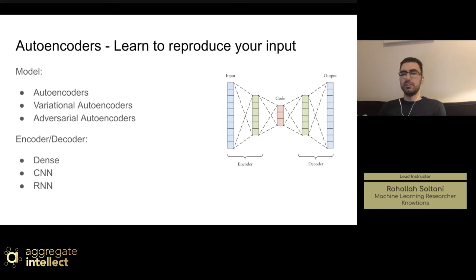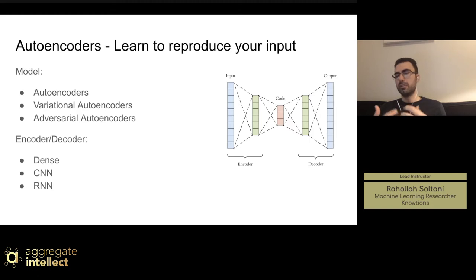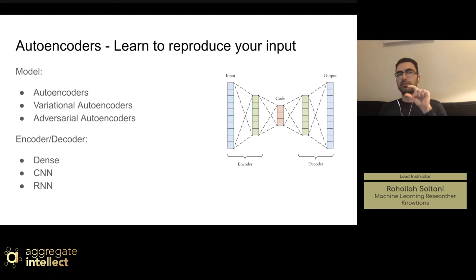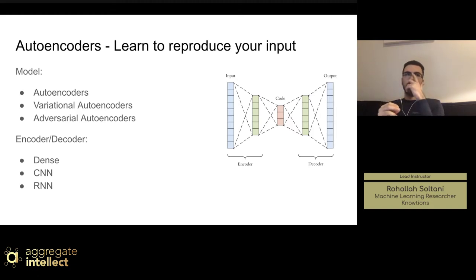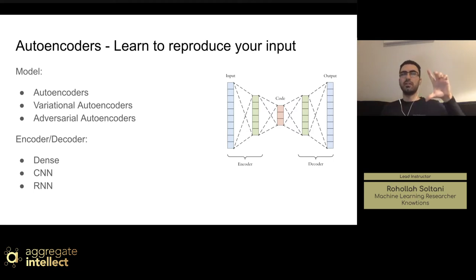This will force the autoencoder to engage in dimensionality reduction, and it will force it to learn how to ignore some noise from your data, because you want to compress it into a lower dimension and still retain most of the features. Since we want to be able to reproduce the data again, it will try to learn the essential features from the data, so you can actually treat it as feature extraction from your input.